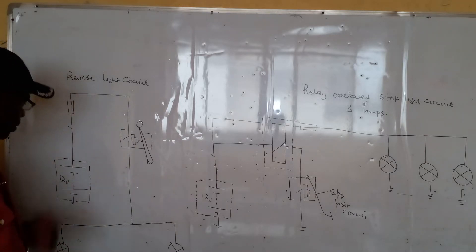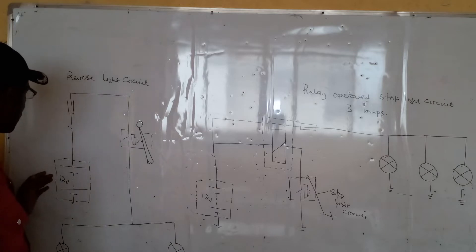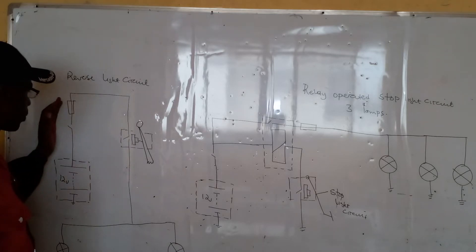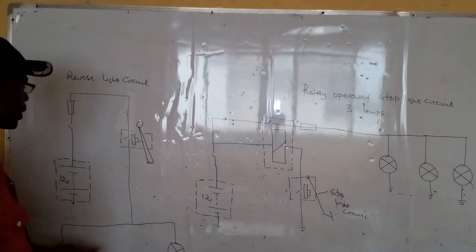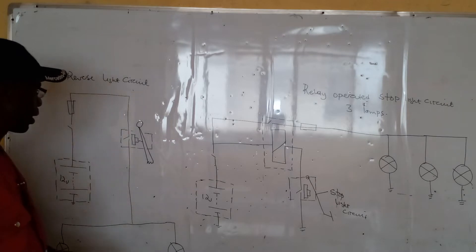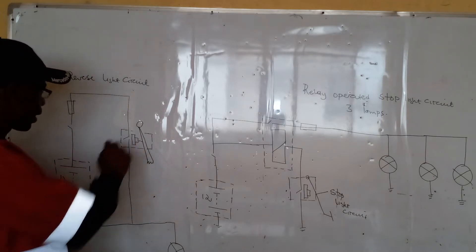Operating principle is quite simple. Current flows from the battery to the fuse, but for the system or for the lamps to come on, it requires that the driver engages the vehicle into the reverse gear. So we do have a reverse light switch,